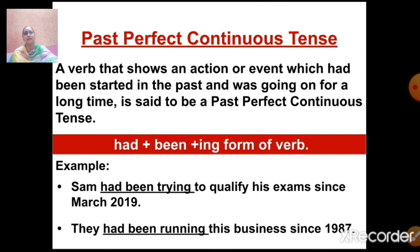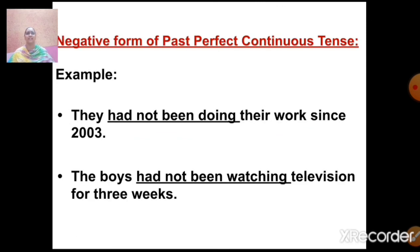Now let us see the negative form of past perfect continuous tense. This is again very simple — you just need to add 'not' with the helping verb, no matter whether the subject is singular or plural. For example: 'They had been doing their work since 2003.' And: 'The boys had not been watching television for three weeks.'